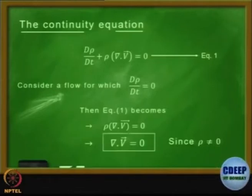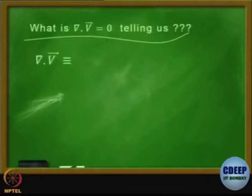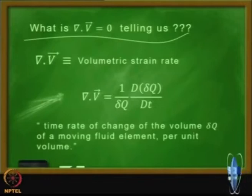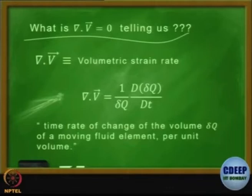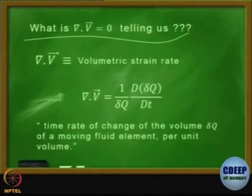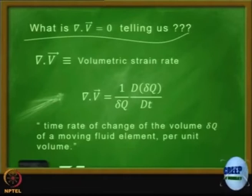Del dot V equal to zero is the condition for incompressible flow. What it means is the volumetric strain rate — that is, the time rate of change of the volume of a moving fluid element per unit volume — is zero. So if you take a small fluid element and focus your attention on that element, as that element moves in the fluid, if its total volume remains the same, the element may transform, but if its volume remains the same, then the flow is incompressible.